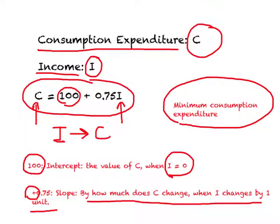Based on this equation, if my income goes up by $1,000, by how much will consumption expenditure increase? It will be $750. We know this because it is 0.75 times the change in income, which is $1,000. This illustrates what we try to do in economics: use a simple mathematical equation and apply it to economic issues, and you can see what rich results we get.